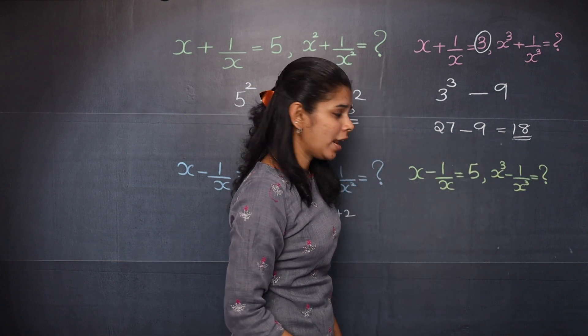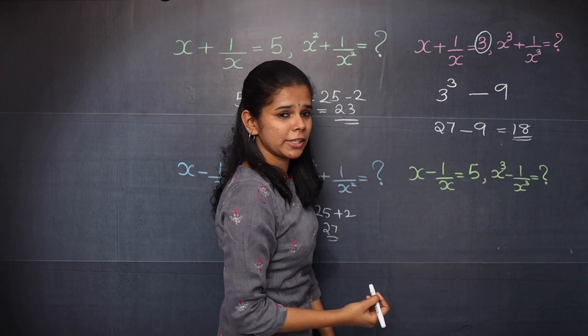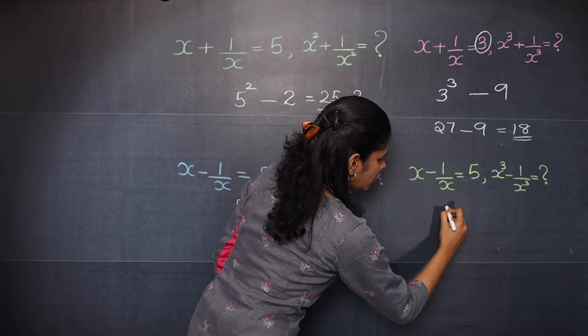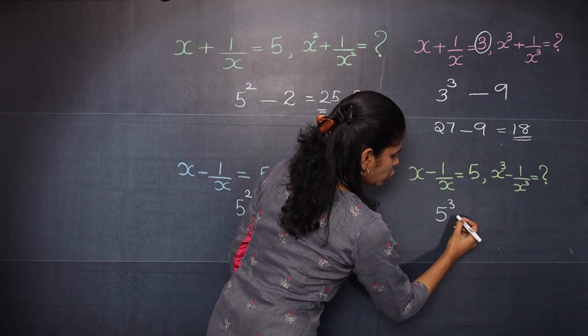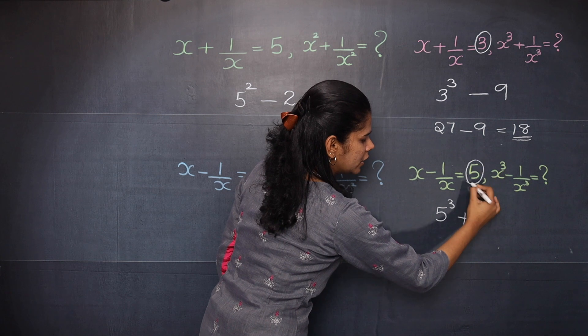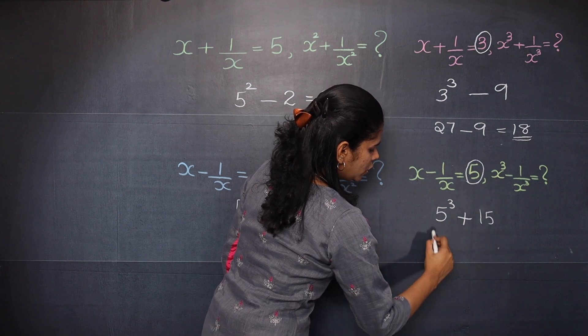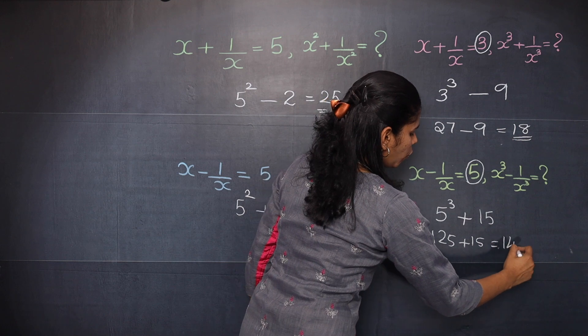Now let's look at the last one. Here also you have x cube minus 1 by x cube as the question. So here you should write 5 cube. This is minus and minus, so it is plus 3 into the number here. That is 15. So 125 plus 15 that is equal to 140.